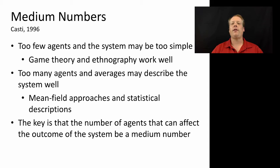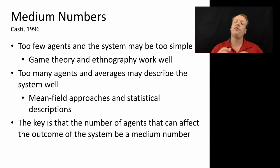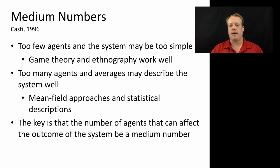So let's talk about each of these in turn, starting with medium numbers. This idea comes from a paper that John Cassidy wrote in 1996 called 'Seeing the Light at L4ALL,' which is a reference to a famous agent-based model by Brian Arthur. Cassidy argued that having a medium number of agents is usually a good clue that an agent-based modeling approach will provide you with a powerful representation. If there are too few agents in the system — just a few agents — the system may in fact be too simple, and something like game theory or ethnography might provide a better description.